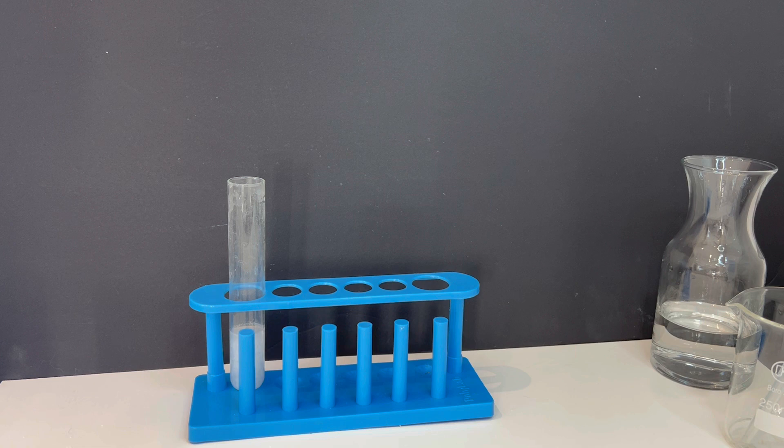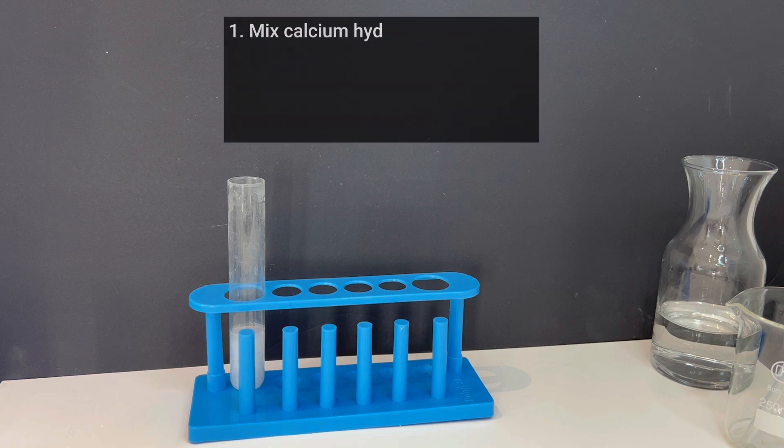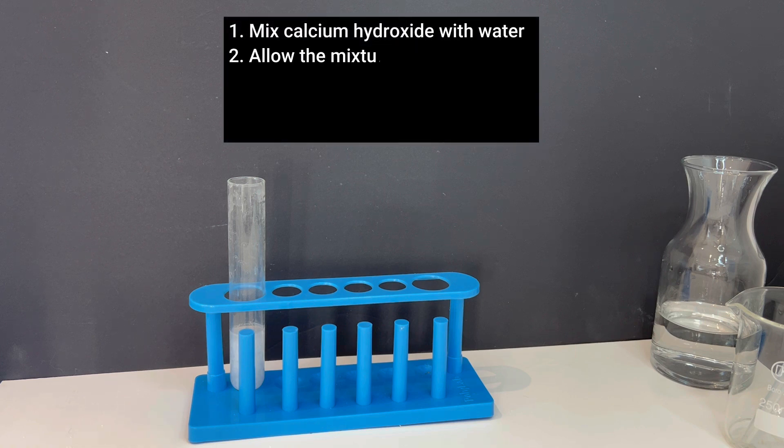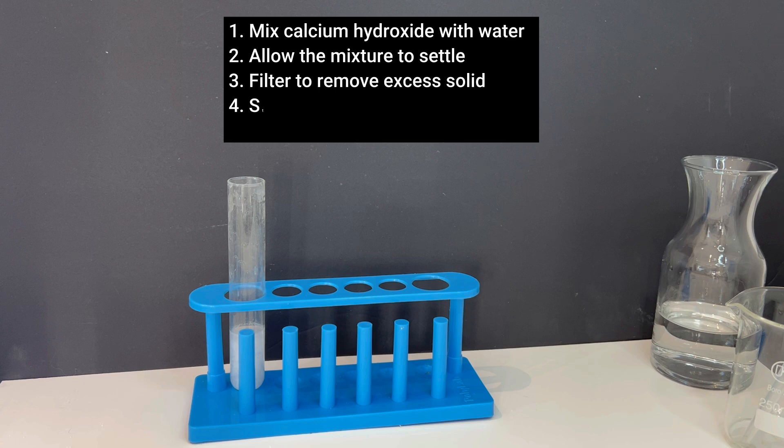So let's quickly recap. Mix calcium hydroxide with water. Allow the mixture to settle. Filter to remove the excess solid. Store the clear liquid as lime water and use it to test for carbon dioxide.